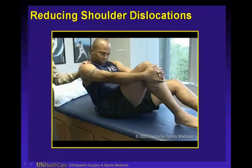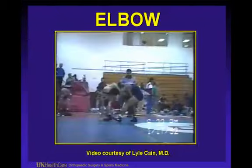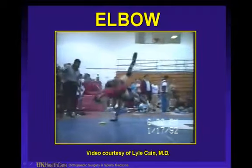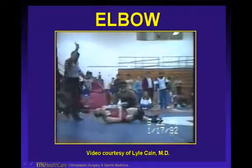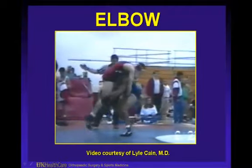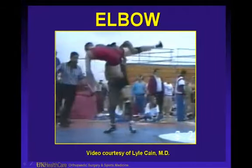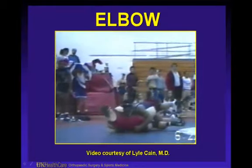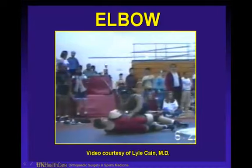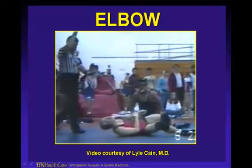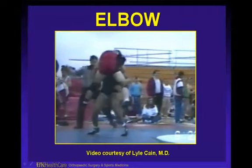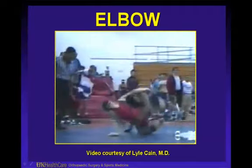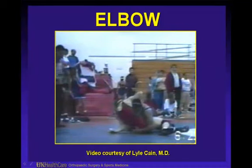The hardest dislocation to get back in is the first one. Sometimes the athlete can self-reduce and they may only be subluxing as opposed to truly dislocating. Elbows can look pretty ugly. This is an elbow dislocation — typically these reduce themselves and we don't see many that are still unreduced when they reach the emergency room. Be aware of the neurovascular potential problems with the brachial artery, ulnar nerve, and median nerve.